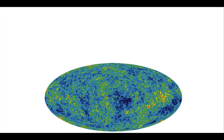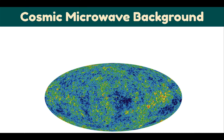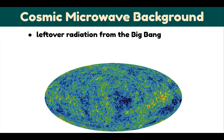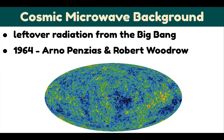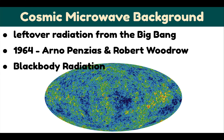This slide shows an image of the Cosmic Microwave Background Radiation, or CMB, thought to be leftover radiation from the Big Bang. Its accidental discovery in 1964 by Arno Penzias and Robert Woodrow Wilson earned them the Nobel Prize in Physics in 1978. CMB is observed as a strikingly uniform faint glow in the microwave band coming from all directions, and is a blackbody radiation at a temperature of 2.725 Kelvin.